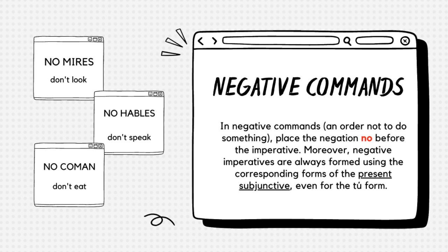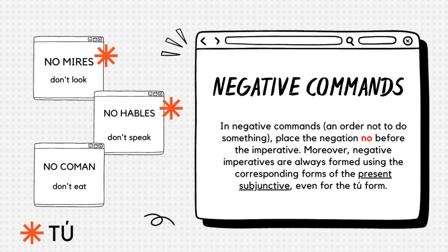Let's look at some examples. Both the no mires and no hables negative commands are found in the tú form. The no coman negative command is found in the ustedes form.